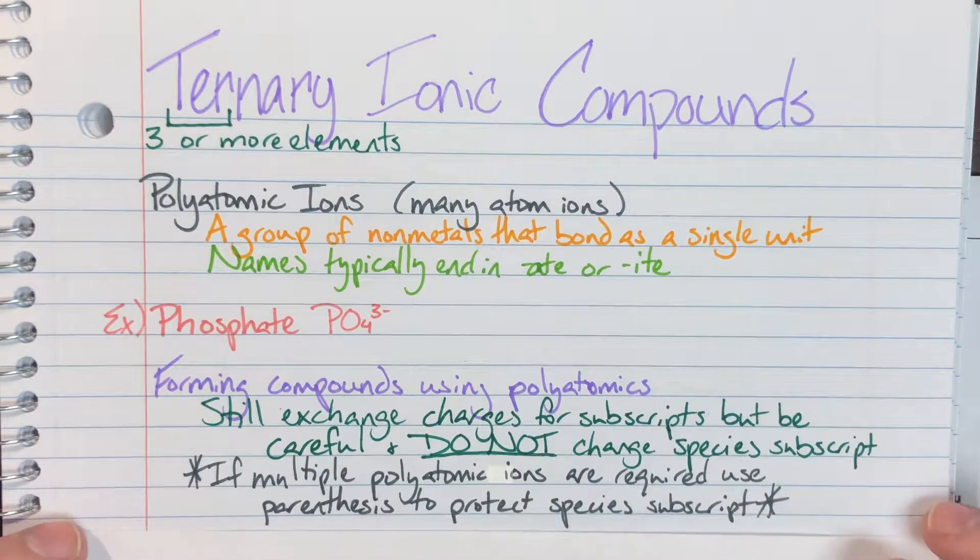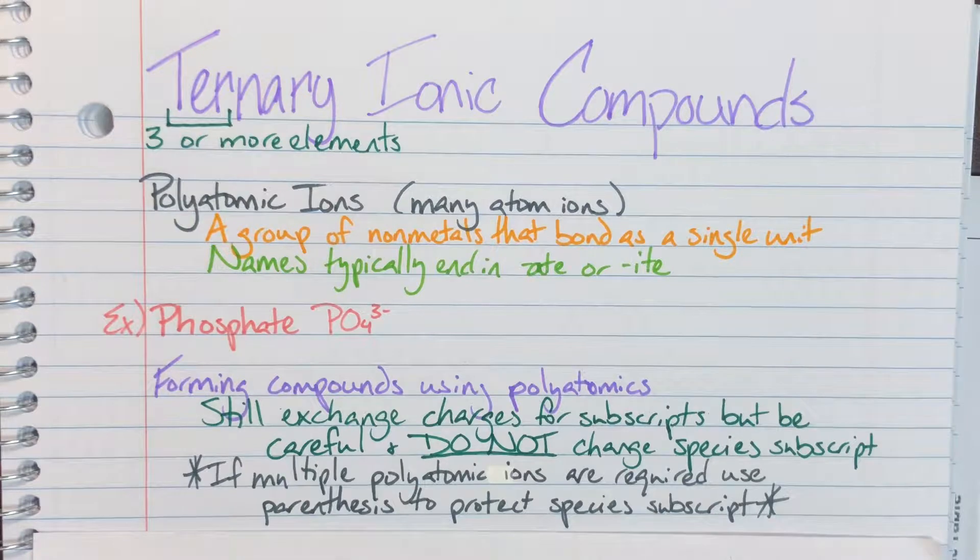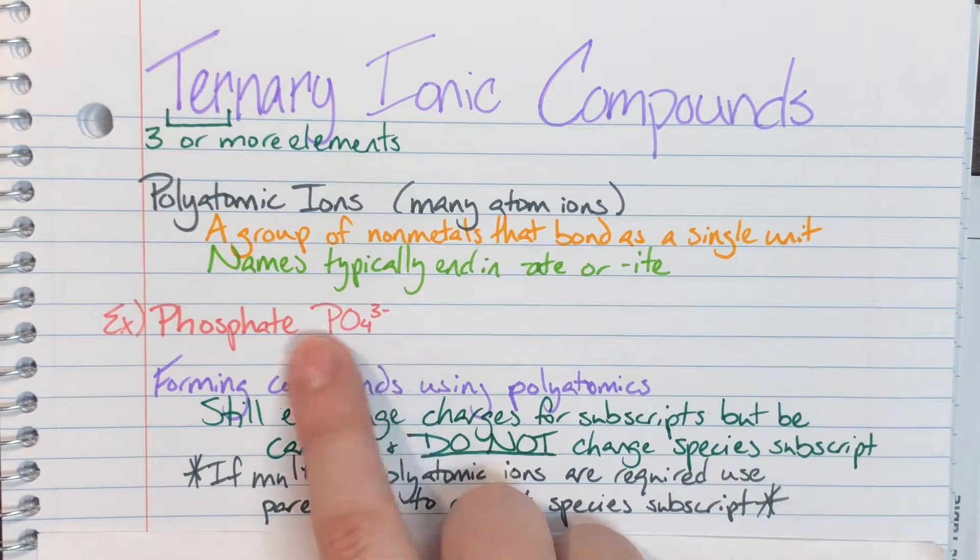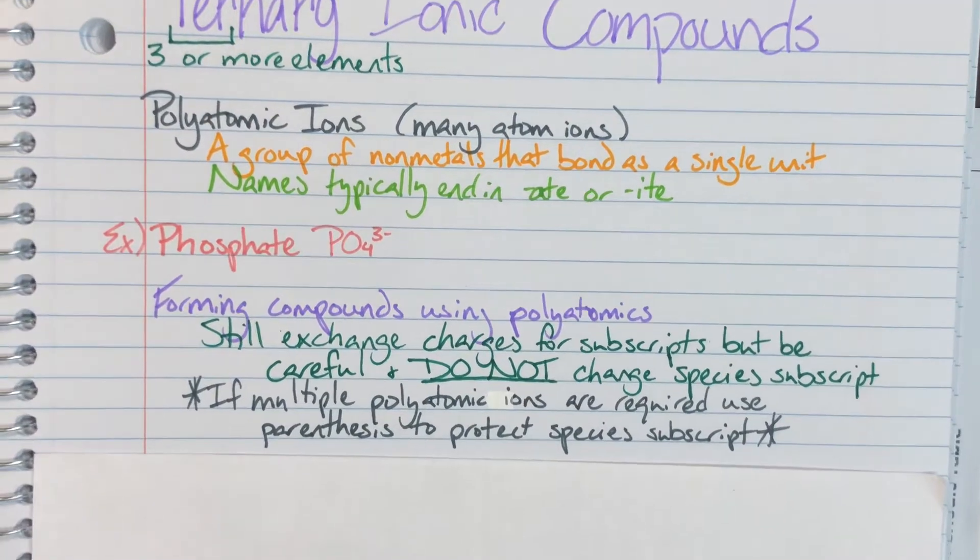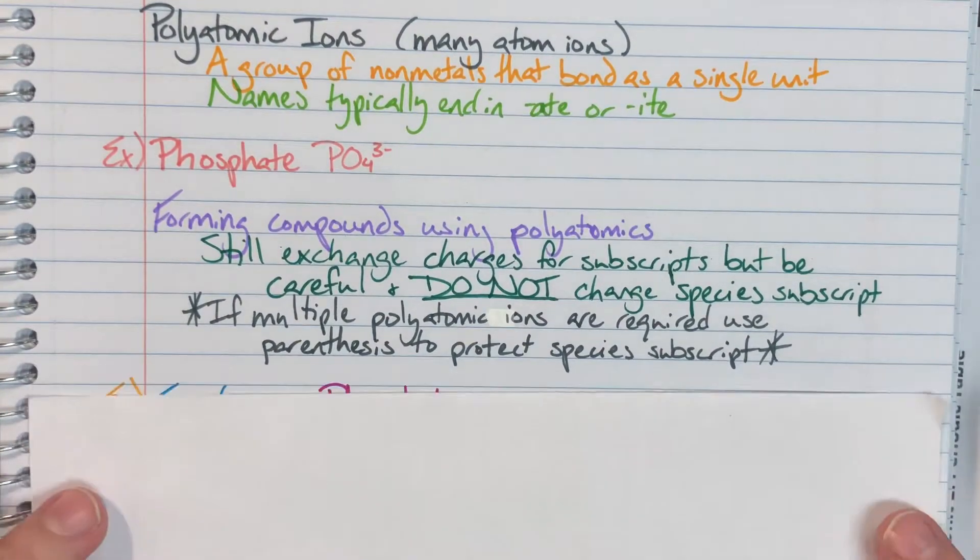Instead, if we are going to have to have multiple of a particular polyatomic ion, we are going to have to protect that polyatomic ion's ratios using parentheses, and that will help us to be able to identify that that particular ion is staying together and we are not breaking it apart.